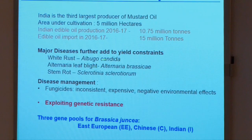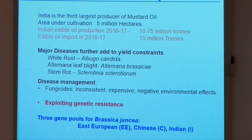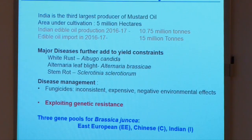We work on three major diseases of mustard. One is white rust, which is caused by an oomycete called Albugo candida. Another important disease is Alternaria leaf blight, caused by the fungal pathogen Alternaria brassicae. And stem rot, which is more recently emerging as a major disease in the Indian scenario due to changes in cultural practices as well as climate change. Today I will mainly focus on white rust, and towards the second half of the talk, I will give an overview of what we have achieved with Alternaria blight.